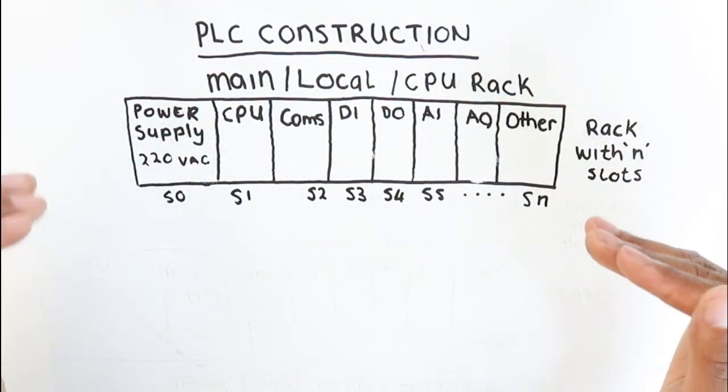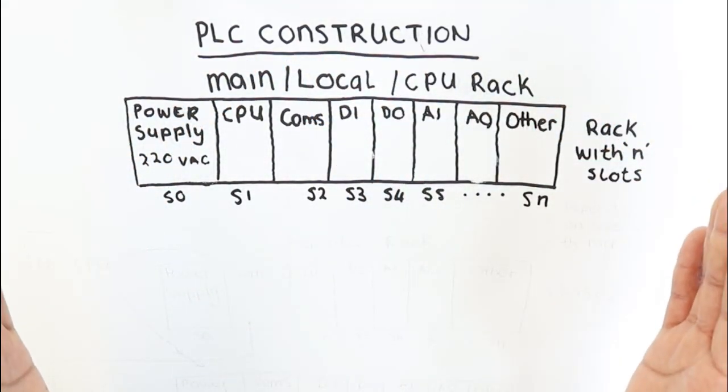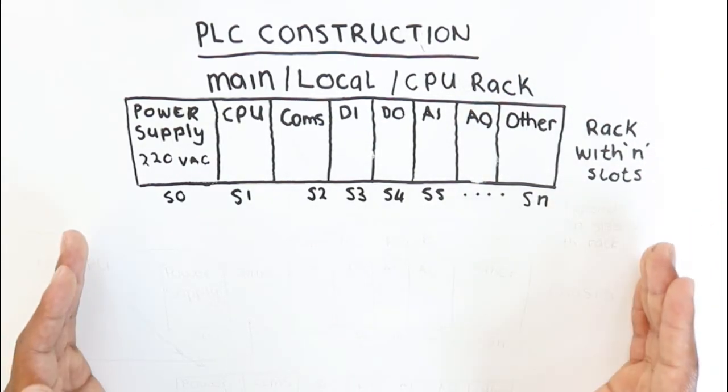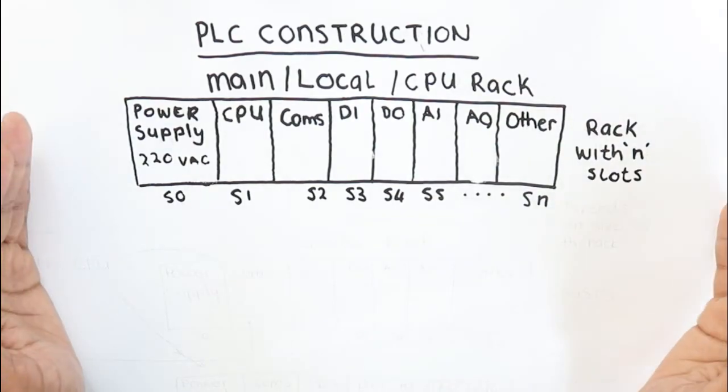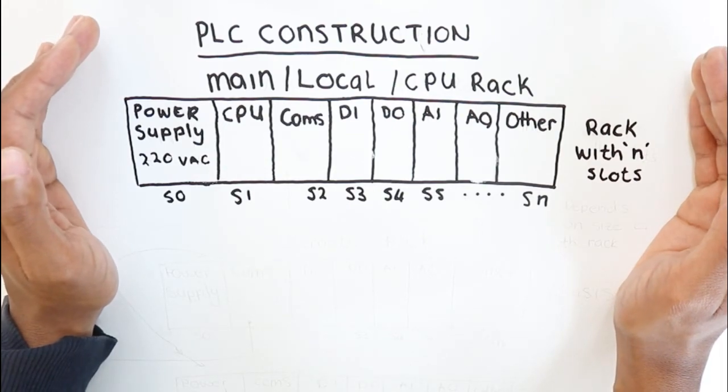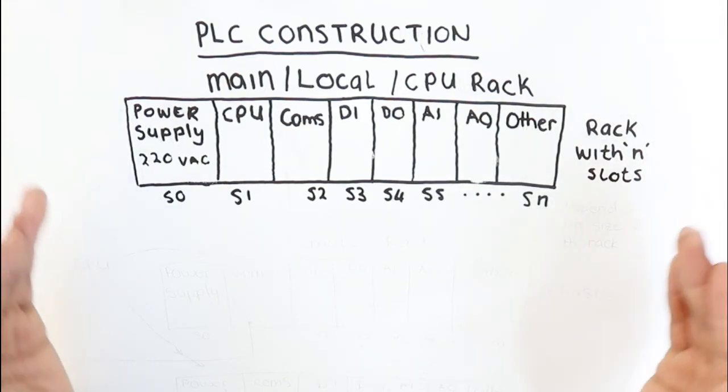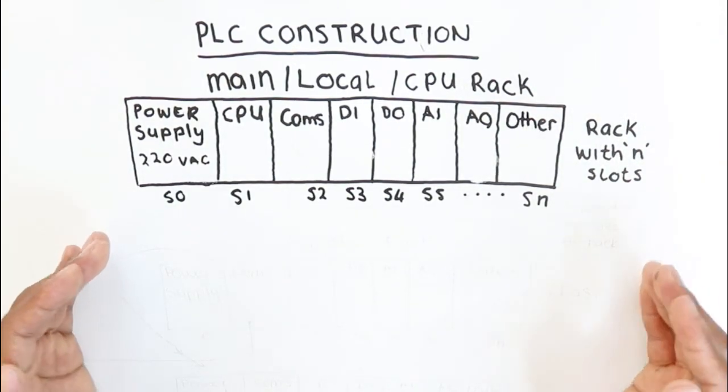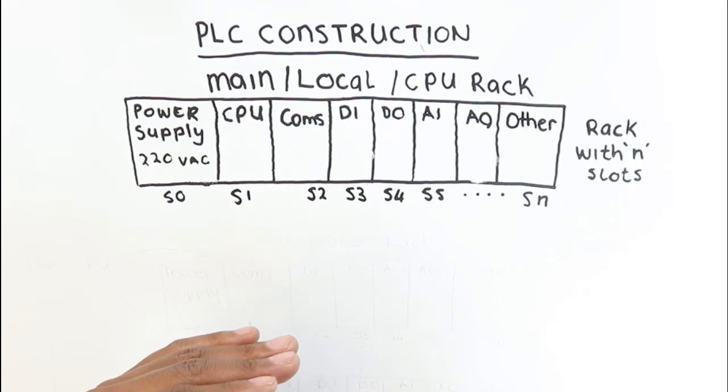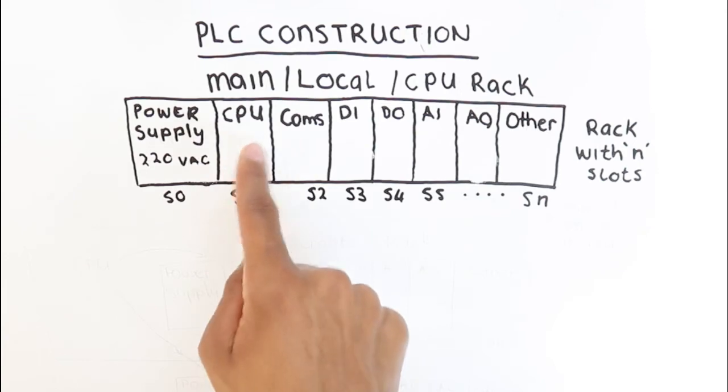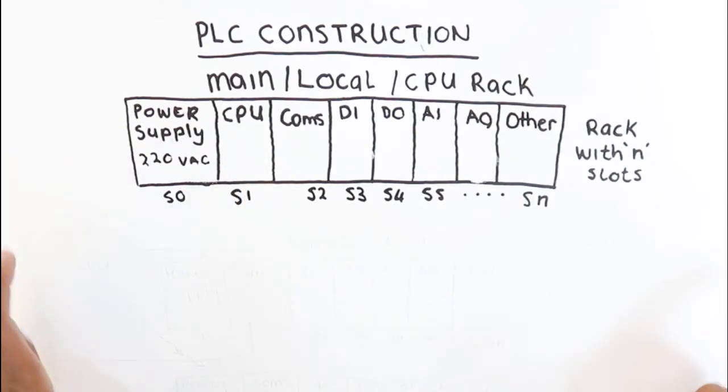Now the fact that there is something called a main rack means that we also have another type of rack in our PLC construction, and that is called the remote rack. Why is that necessary? You'd need remote racks because if you run out of space on your main rack, you need to have your IO being interfaced with the PLC on another rack. That remote rack must then be able to transfer the signals to and from the CPU.